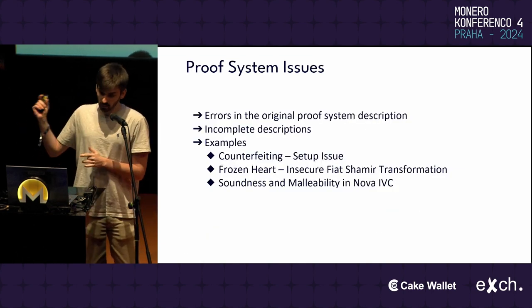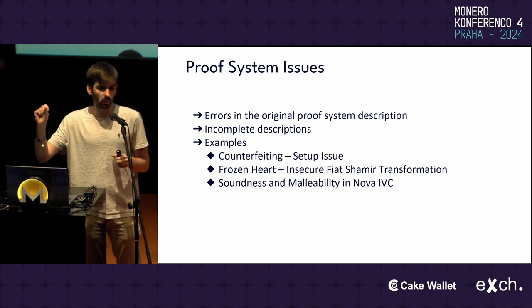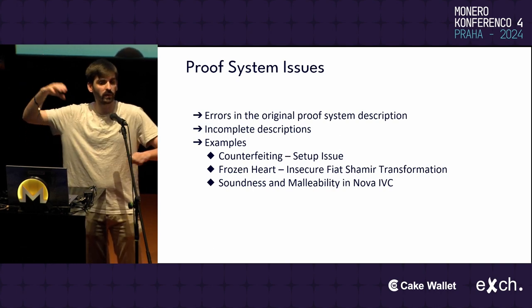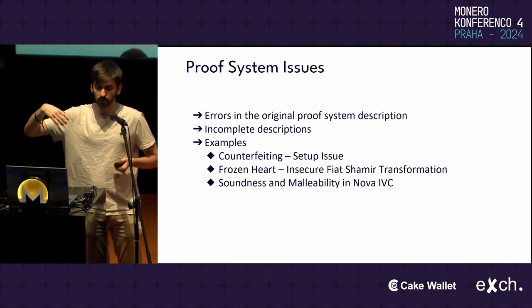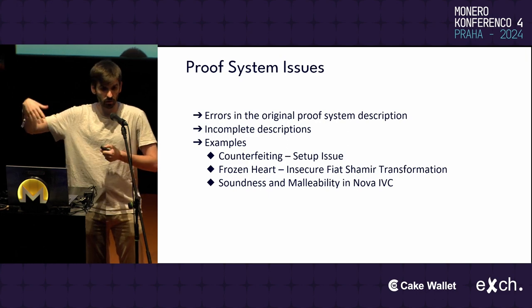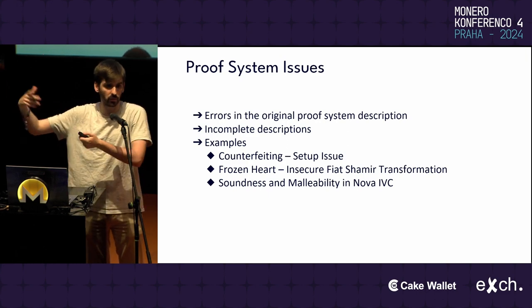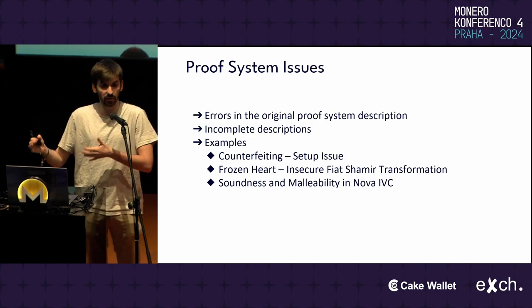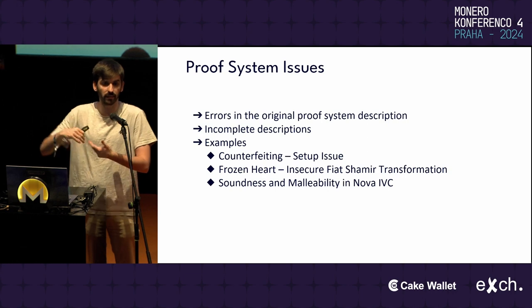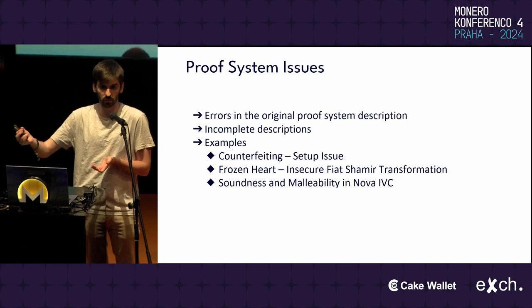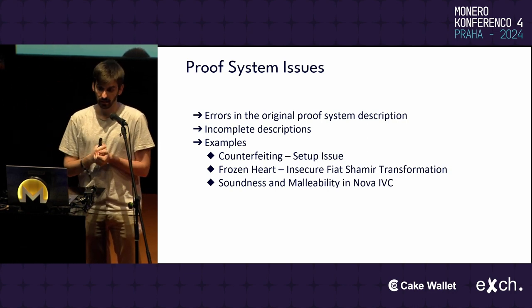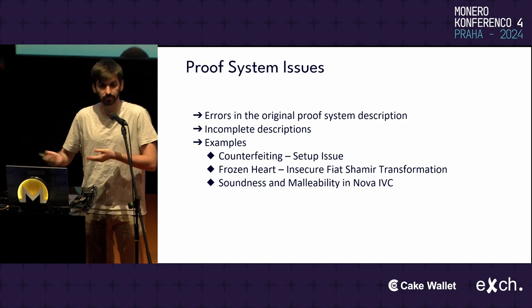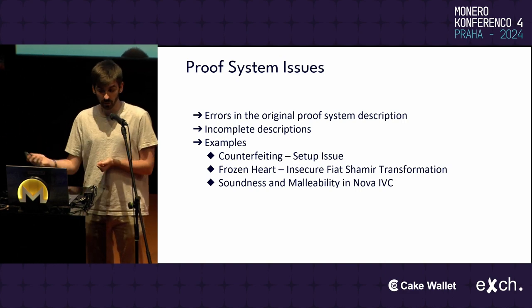On top of that, issues in the original descriptions of zero-knowledge proofs in the original papers could lead to various issues, and everything built on top of those proof systems would be vulnerable.